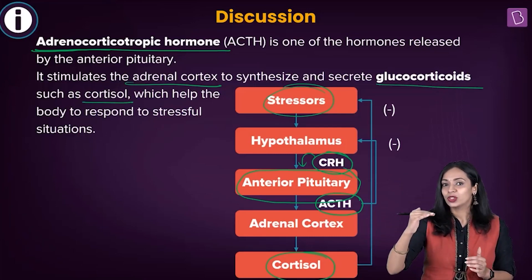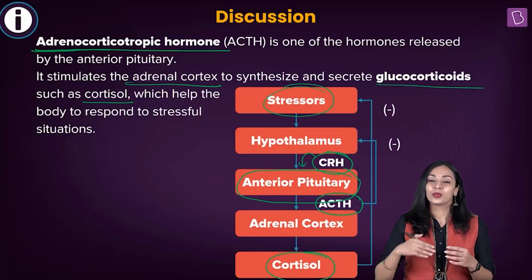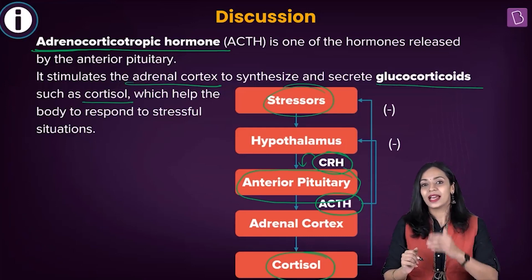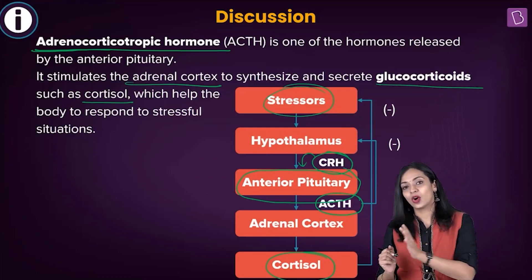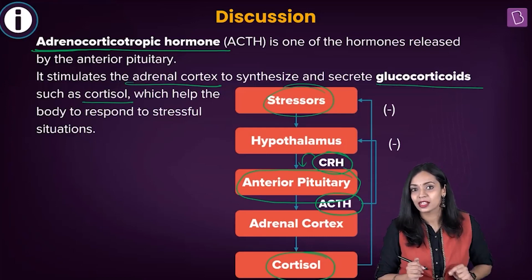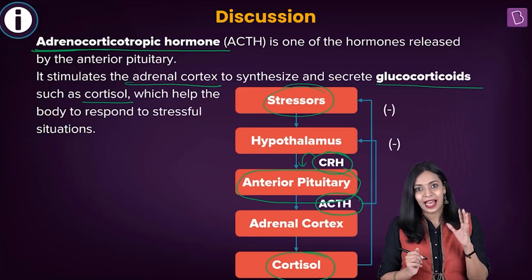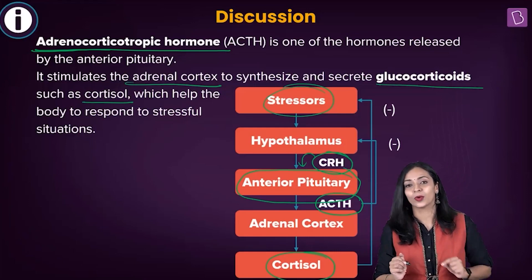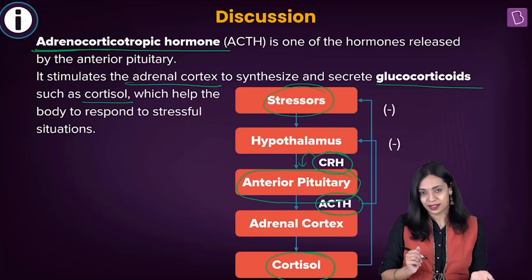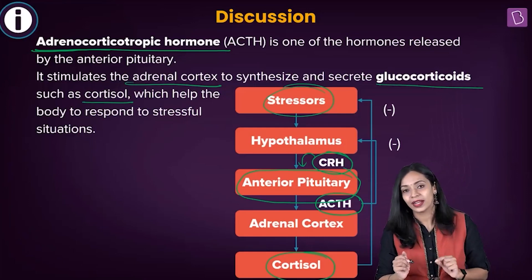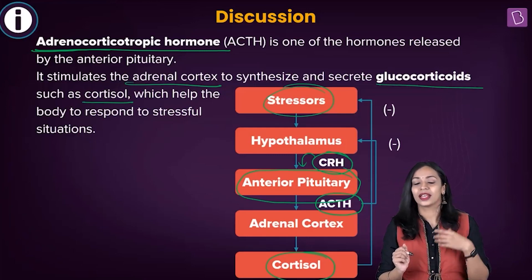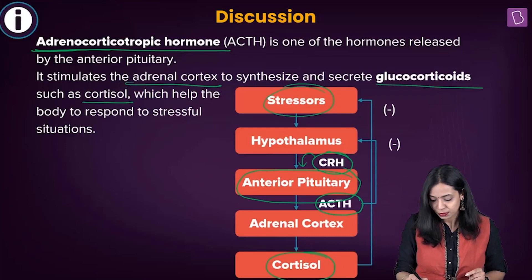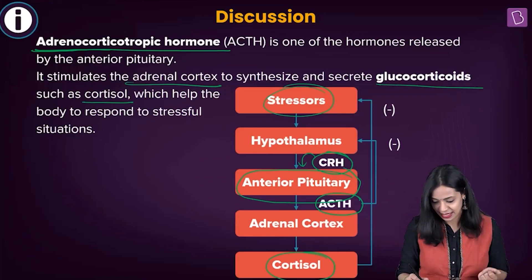To recap: during stress, the hypothalamus produces CRH (corticotropin releasing hormone), which acts on the anterior pituitary, stimulating it to produce ACTH (adrenocorticotropic hormone). ACTH then acts on the adrenal cortex and stimulates it to secrete glucocorticoids like cortisol. The correct answer to this question is ACTH.